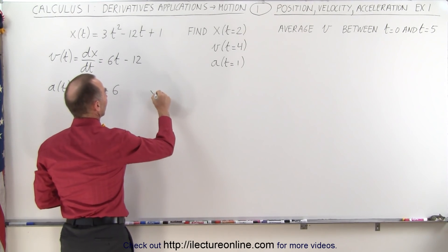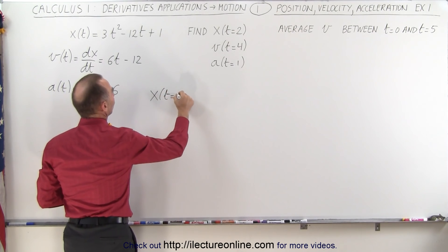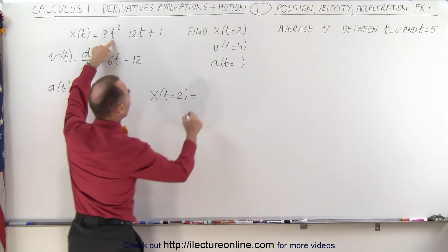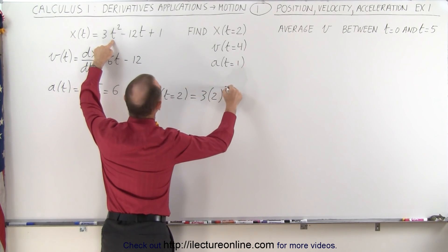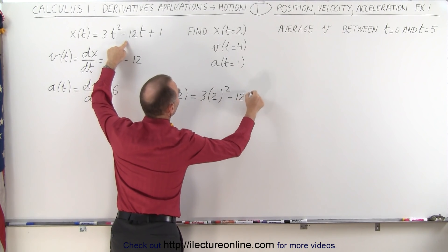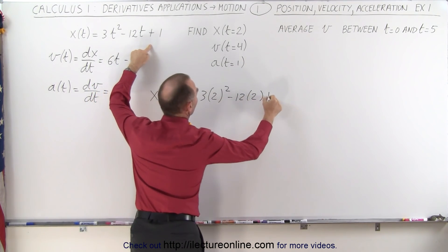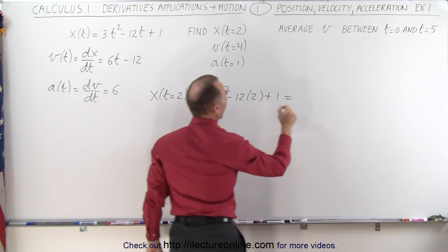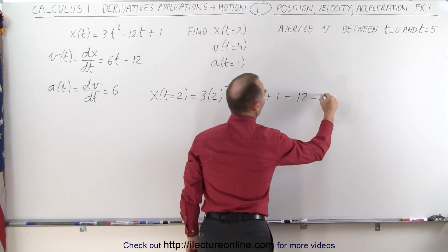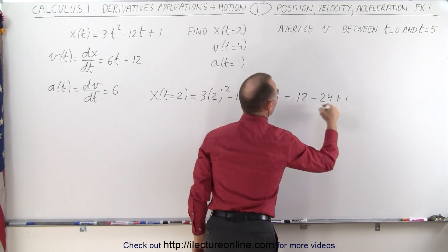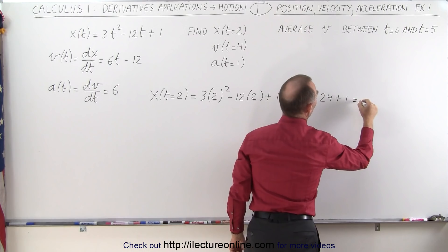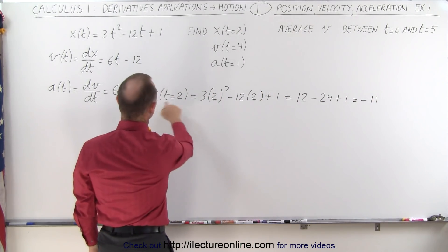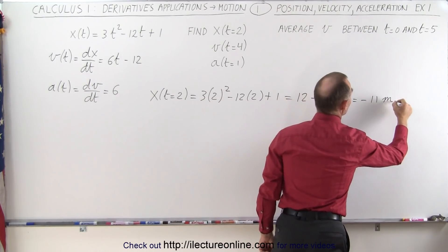Now we're going to evaluate these three functions for a particular time. We can say that x, when time is equal to 2, is equal to — plugging in 2 for every t — 3 times 2 squared, minus 12 times 2, plus 1. That gives us 12 minus 24 plus 1, which is minus 11. The units for position would be meters, so it's minus 11 meters.